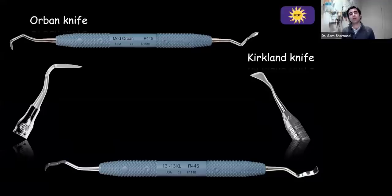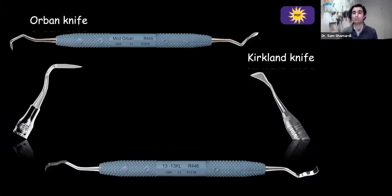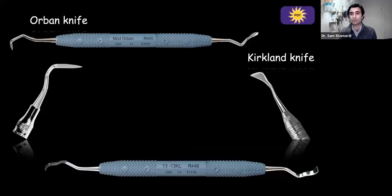The last two I want to mention are the Orban knife and the Kirkland knife. Both come into play more for flap reflection. These are a little bit more case-selective — more relevant in distal areas of second molars, if you're incorporating a distal wedge as part of your surgical flap design. The Orban knife can also be used as a first step to help release some of your flap and make sure your flap is off the periosteum before starting with the Boozer instrument. Both are available from PDT.